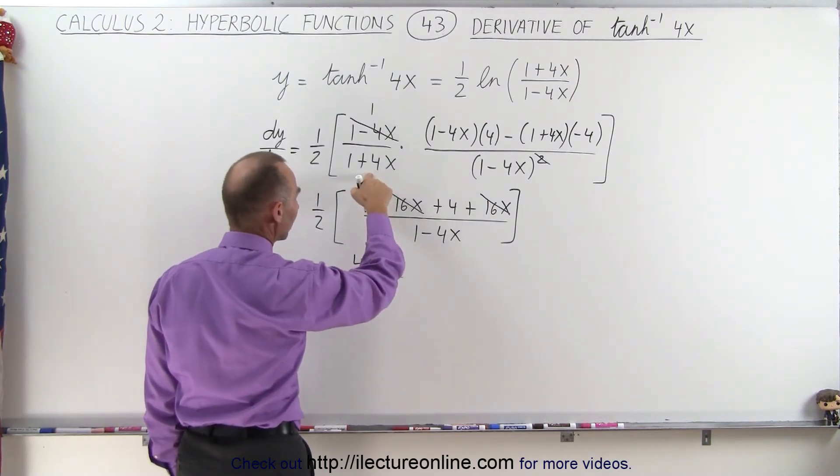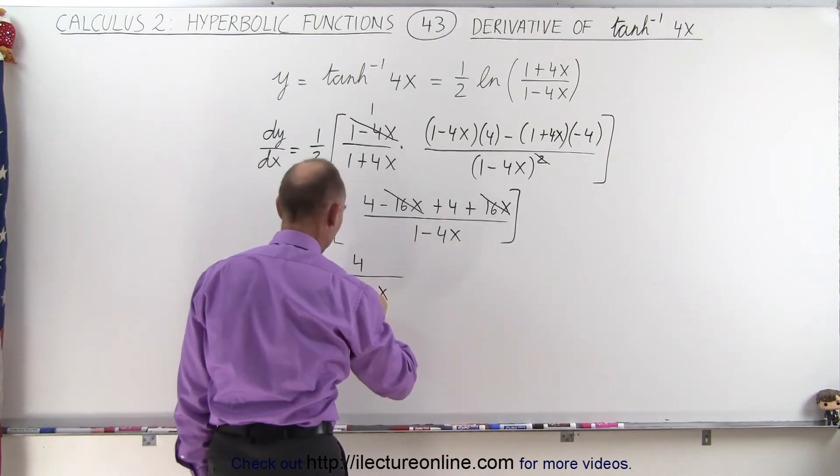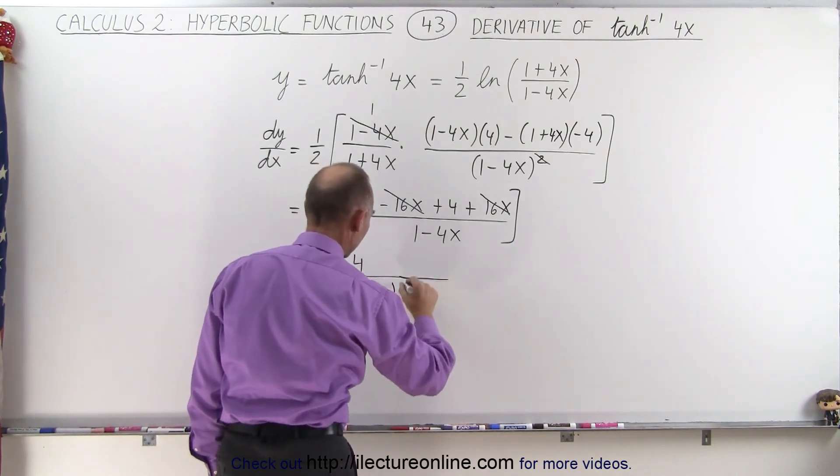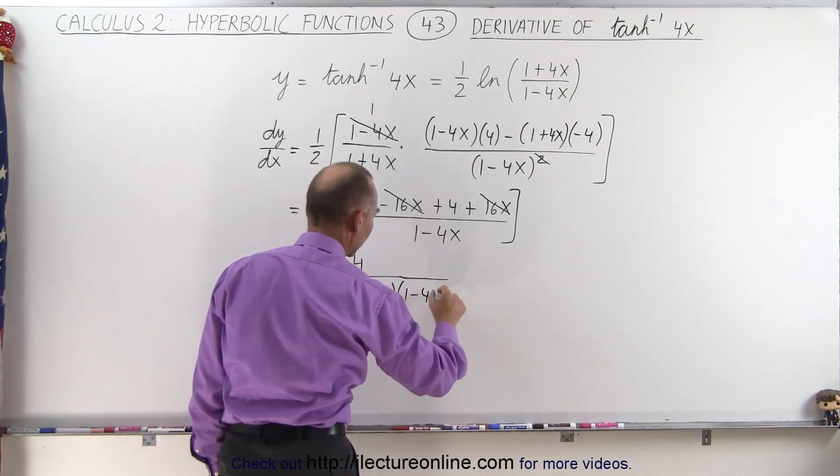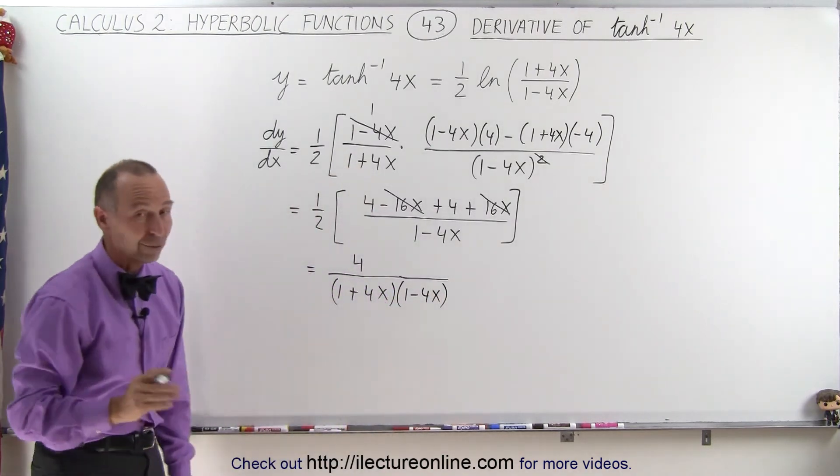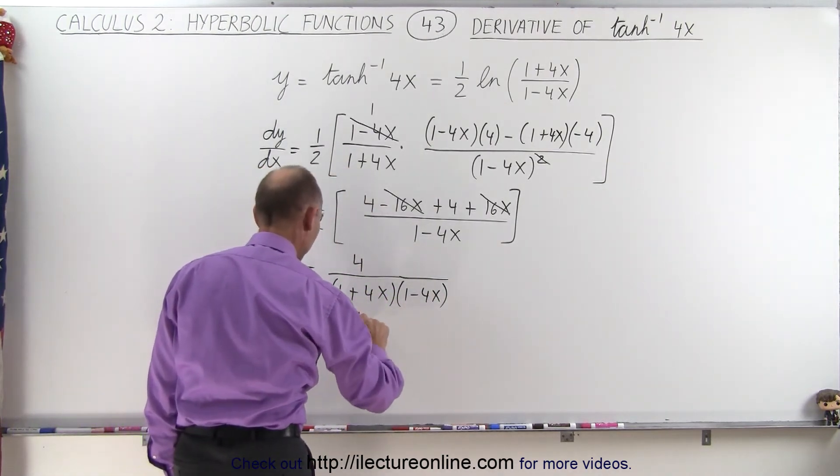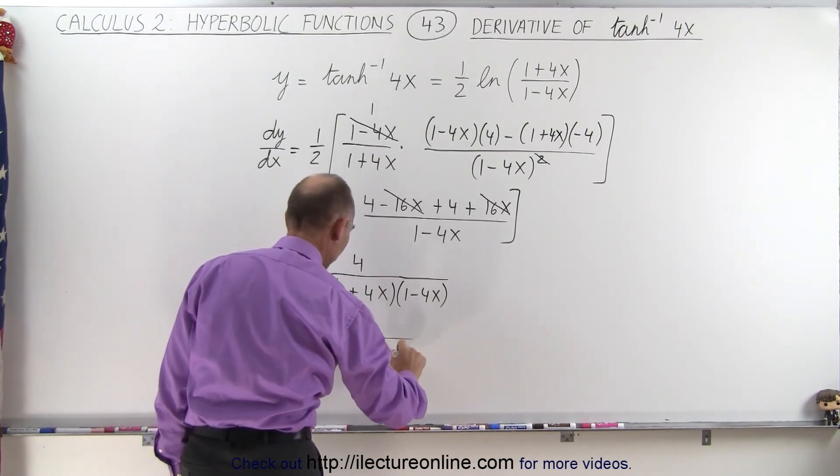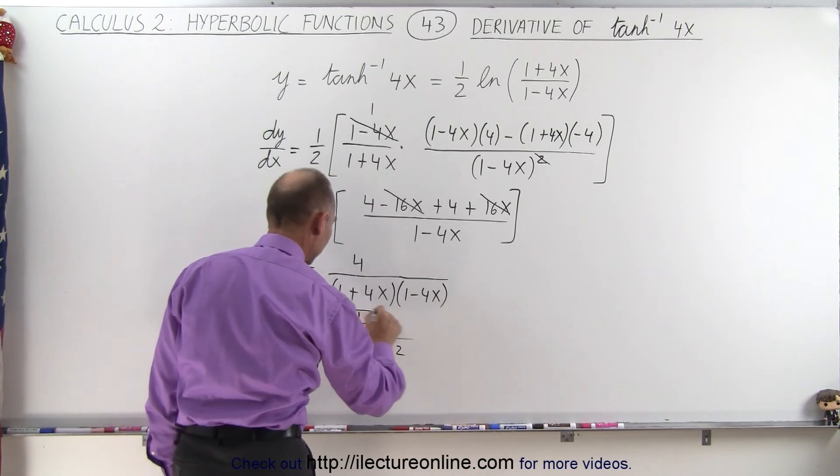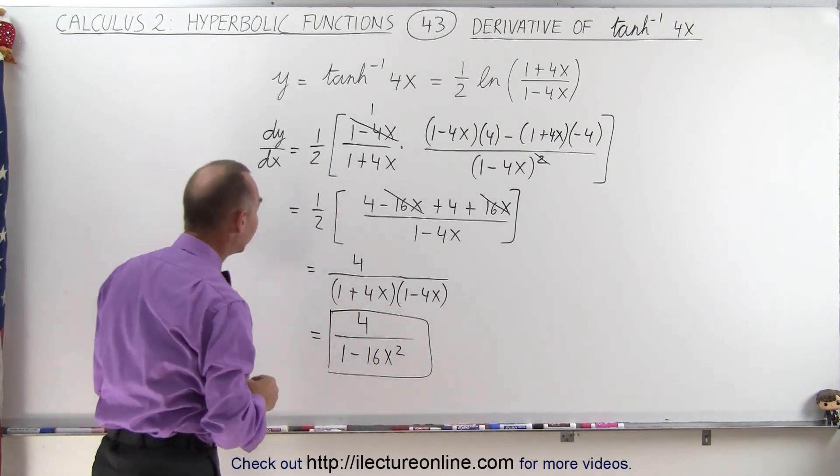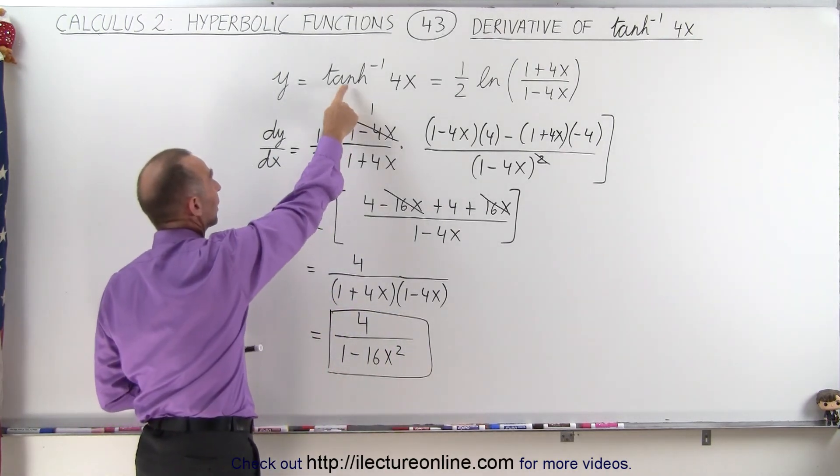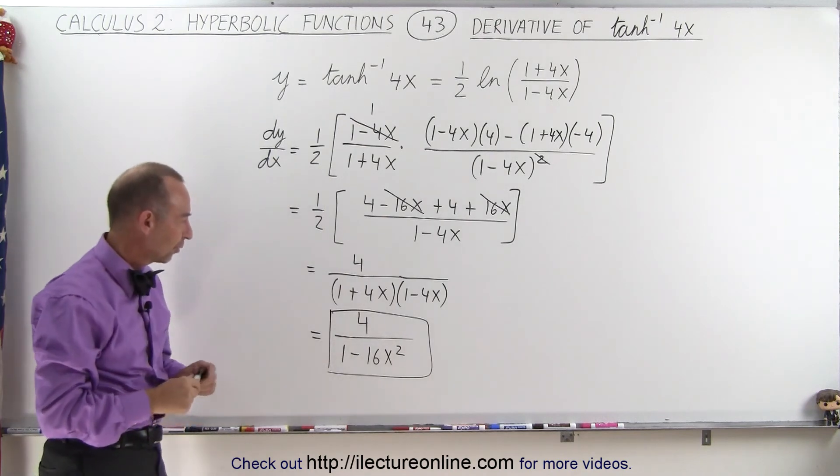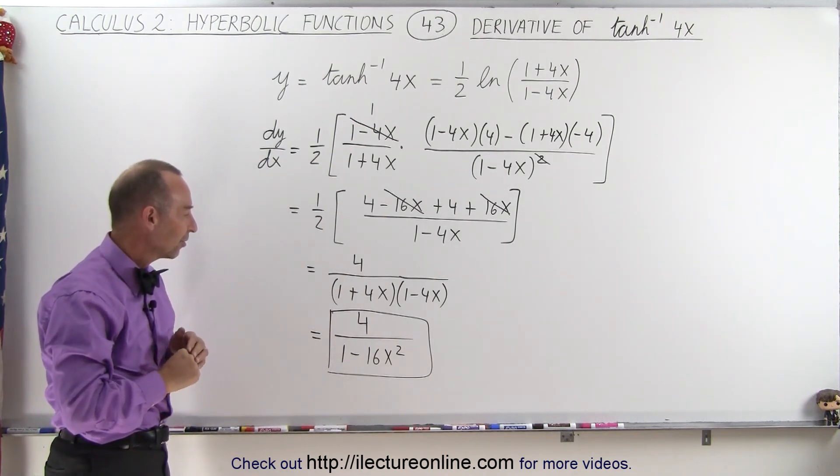But we still have the 1 plus 4x over here. So let me just write it like this, times 1 minus 4x. So we're not quite done yet. We now have to multiply those two in the denominator. So this becomes 4 divided by 1 minus 16x squared. And that looks like it's the legitimate derivative of the inverse hyperbolic tangent of 4x.